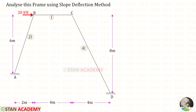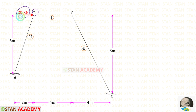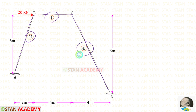Hello everyone. Today we are going to analyze this frame using the slope deflection method. In this frame, there are two inclined members AB and CD and there is a horizontal member BC. There is no member load. In joint B, there is a nodal point load of 20 kilo Newton acting towards the right side, so the sway will occur towards the right side. The moment of inertia for AB is 2i, for BC it is i, and for CD it is 4i. The length of BC is given as 4 meters.